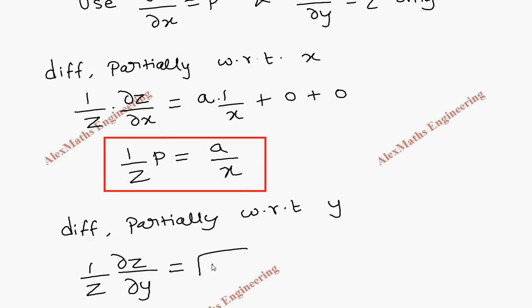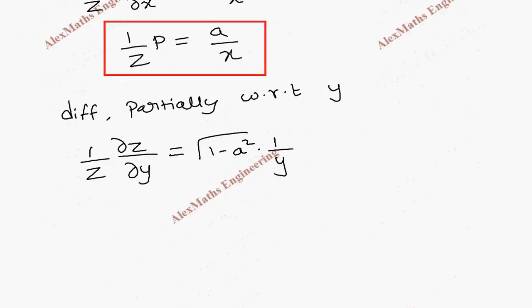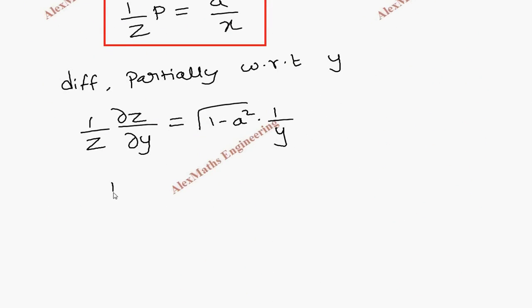So the constant √(1-a²) is written as it is. Log y difference is 1/y. And the remaining term is 0. And now it is 1/z into q equal to √(1-a²)/y.